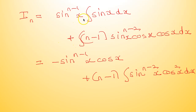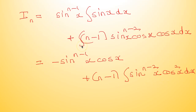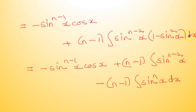So this is minus sin raised to (n−1)x·cos x, and then plus (n−1) integral sin raised to (n−2)x·cos²x dx. Writing cos²x as 1 minus sin²x, it becomes minus sin raised to (n−1)x·cos x plus (n−1) integral sin raised to (n−2)x dx minus (n−1) integral sin raised to nx dx.